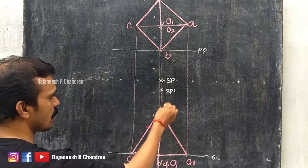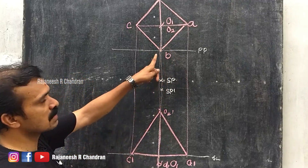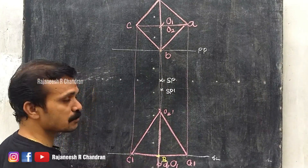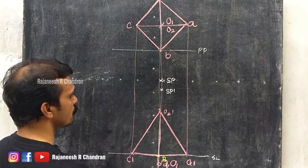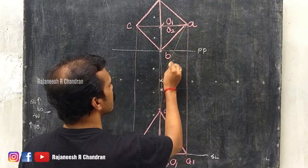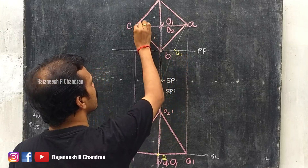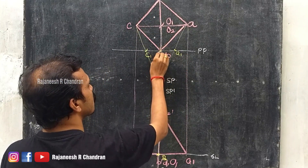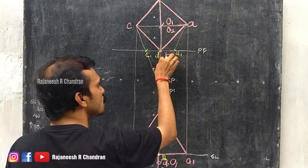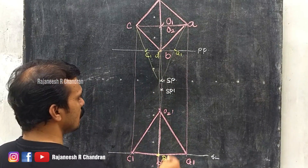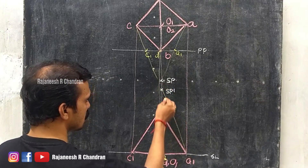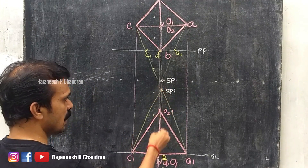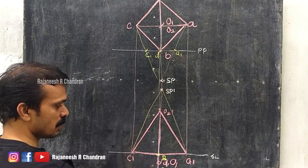Now connect SP with B. Since B is touching the picture plane, the perspective of B will be the front view point itself — capital B. Connect SP with A, so this will be A1. SP with C, so this will be C1. SP with D, so this will be D1. This will be O11, and this will be O21. Connect SP dash with A dash, SP dash with C dash, SP dash with D dash, SP dash with O2 dash, and SP dash with O1 dash.